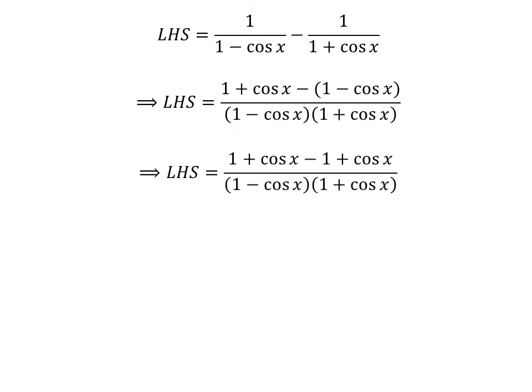Removing the brackets in the numerator, and using the fact that 1 minus cosine of x times 1 plus cosine of x equals 1 minus square of cosine of x, and cancelling plus 1 and minus 1, gives us the left hand side equal to 2 times cosine of x upon 1 minus square of cosine of x.